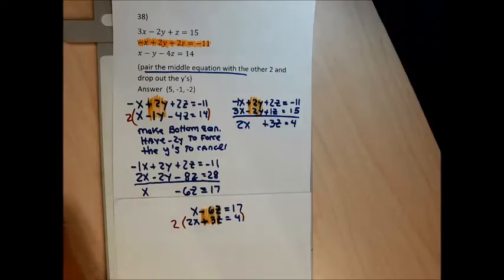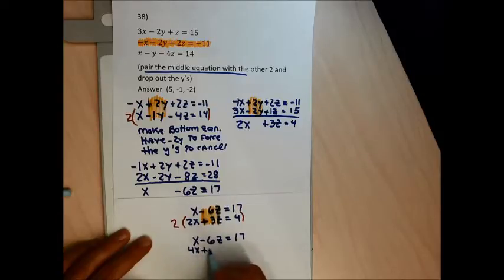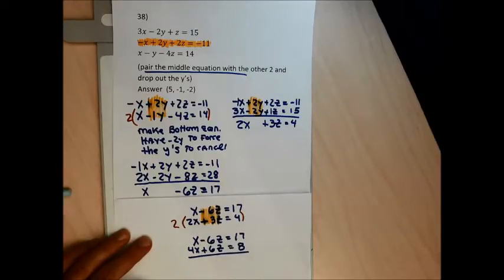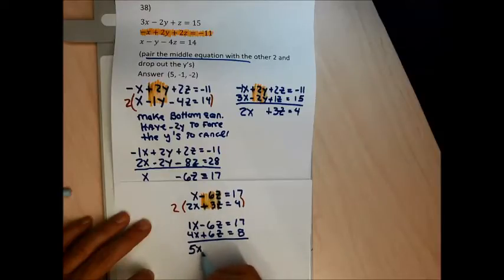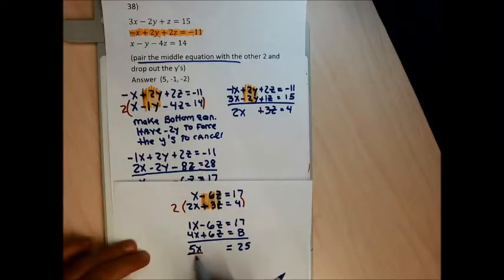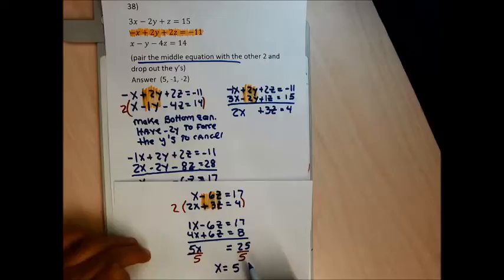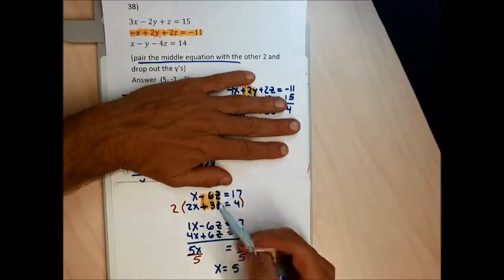I took the two equations from the last step and stacked them. Multiplying the bottom by 2 gives 4x plus 6z equals 8. Adding: x plus 4x is 5x, the z's cancel, and 17 plus 8 is 25. Dividing by 5 gives x equals 5. That's one of my three answers.